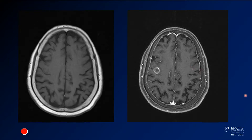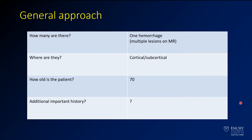You also want to look — maybe there's a little bit of enhancement over on the other side. So when we look at this, we see one hemorrhage, but on MR we're seeing other lesions. The location is cortical or subcortical. This patient is 70 years old. We don't really know additional history about this person, but the things we want to think about: do they have a history of malignancy? Were they hypertensive? Are they septic? What other things do we have going on?